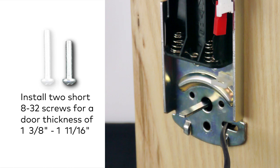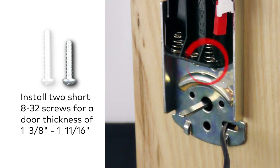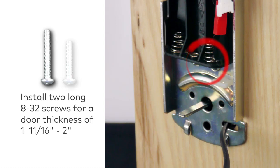If the door thickness is between 1 3/8 inch and 1 11/16 inch, install the two short 8x32 screws with lock washers. If the door thickness is between 1 11/16 inch and 2 inches, install two long 8x32 screws and lock washers.